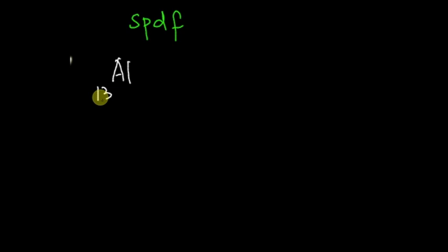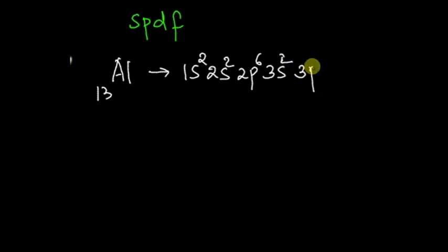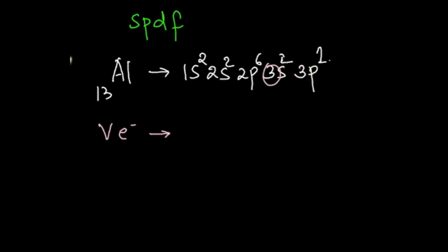Now let us find the position of elements by writing the SPDF configuration. Take aluminium with atomic number 13 — the configuration is 1s2, 2s2, 2p6, 3s2, 3p1. Looking at the last electron filled in 3p1, we can immediately tell the position. Here n equals 3 and there is one electron in the p sub-level, so it is in the third period. The valence electrons are the electrons in shell n equals 3, and the exponent values 2 and 1 add up to 3 total valence electrons.